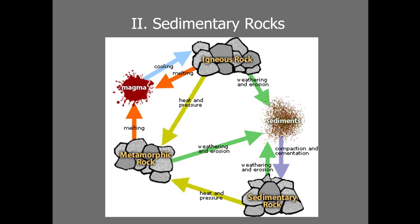The weathering processes that you just learned about produce the raw materials for sedimentary rocks. Whether we have weathering of igneous, metamorphic, or sedimentary rocks, weathering produces sediment. Sediment can then be compacted and cemented into sedimentary rocks, which is our next mini lecture discussion.